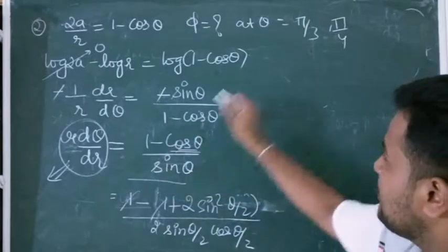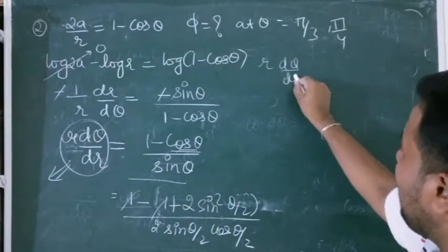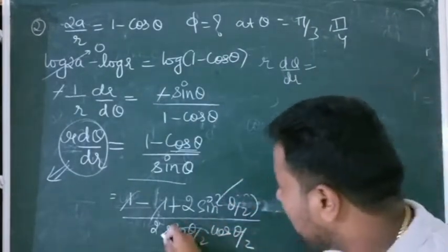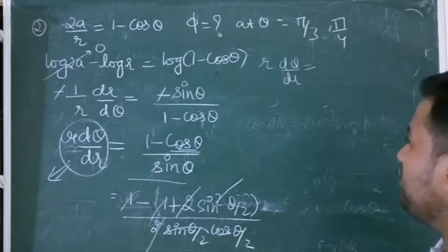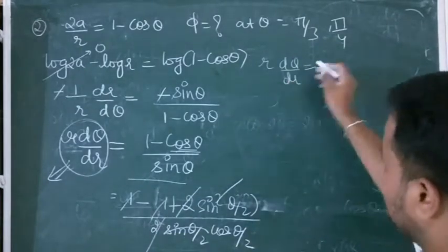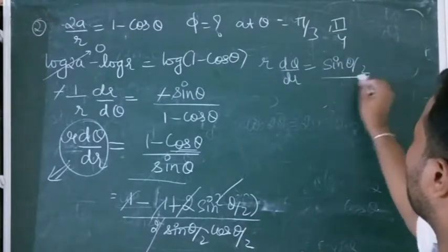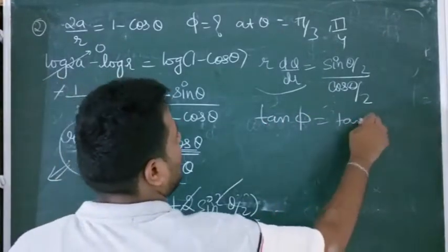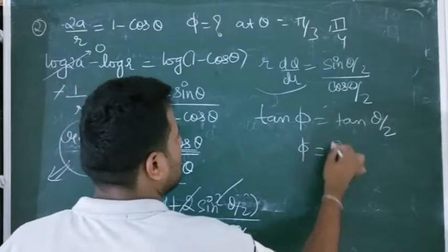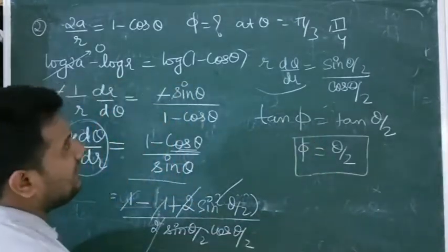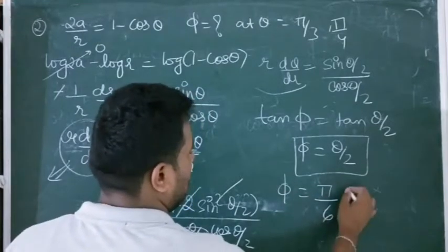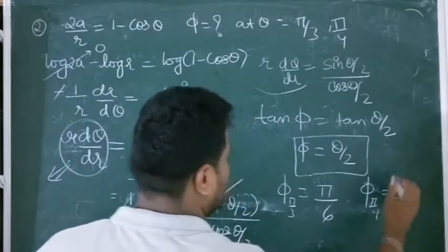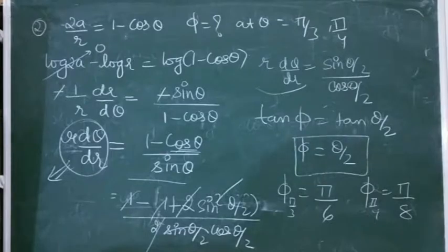After cancellation, r·dθ/dr = sin(θ/2)/cos(θ/2) = tan(θ/2). So tan φ = tan(θ/2), meaning φ = θ/2. At θ = π/3, φ = π/6. At θ = π/4, φ = π/8.